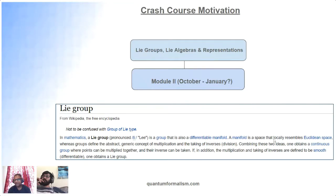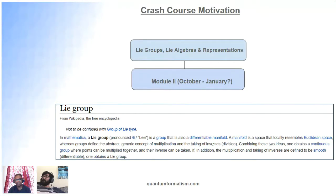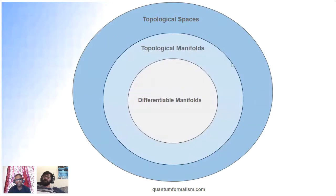A manifold is a space that locally resembles Euclidean space. The motivation behind this crash course is to give you enough understanding of differentiable manifolds — or more precisely, smooth C-infinity manifolds — before we get to Module 2. That way you have enough time to wrap your head around the concept of a manifold and how the group structure and the differentiable structure interconnect. The purpose of this crash course is to get you started with topological spaces.